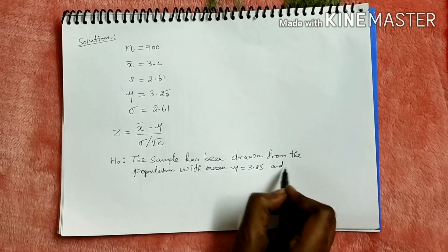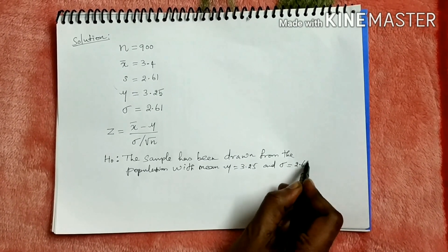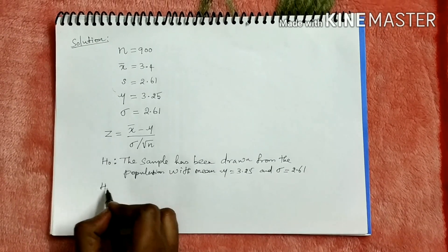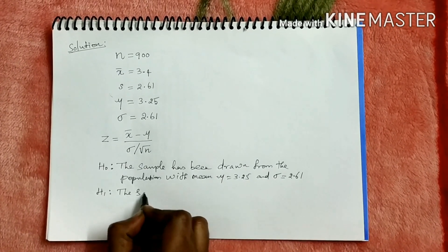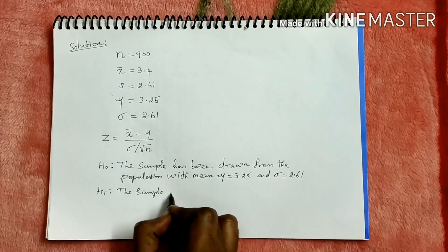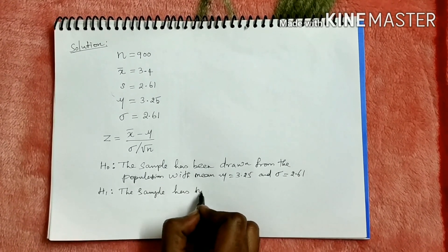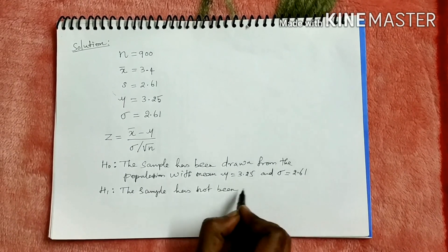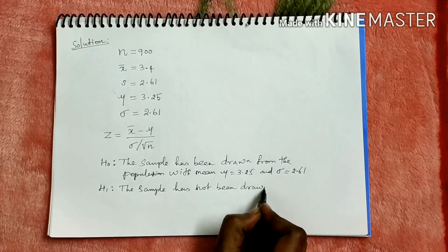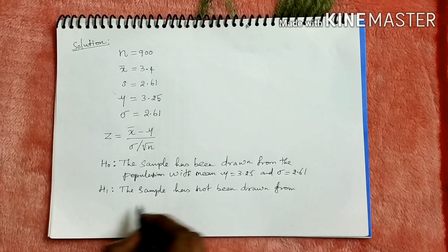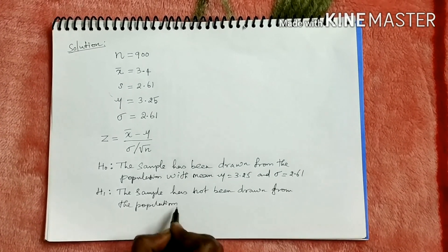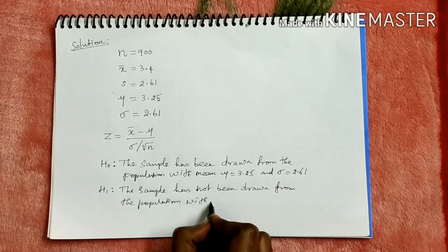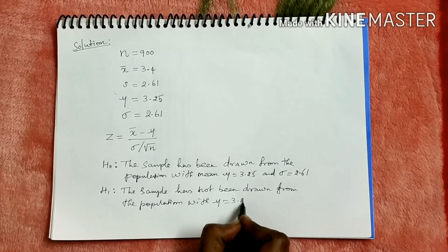And standard deviation is 2.61 cm. What is the alternative hypothesis? The sample has not been drawn from the population with mean 3.25 cm.